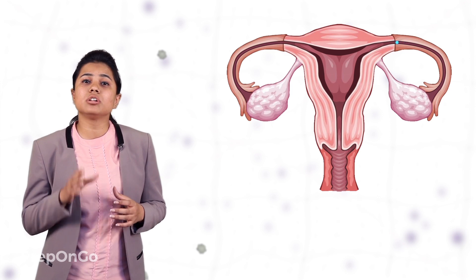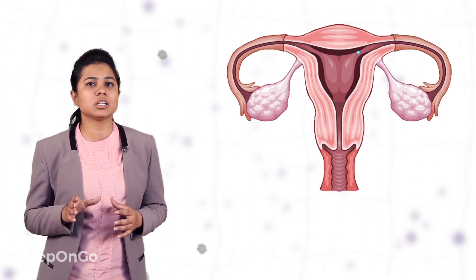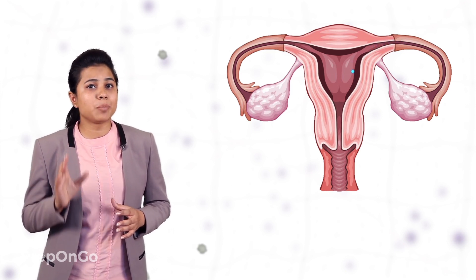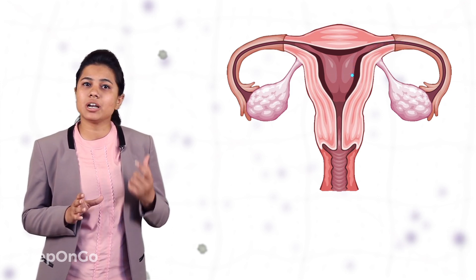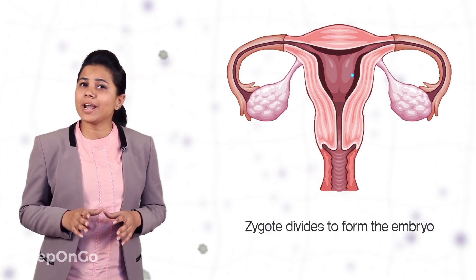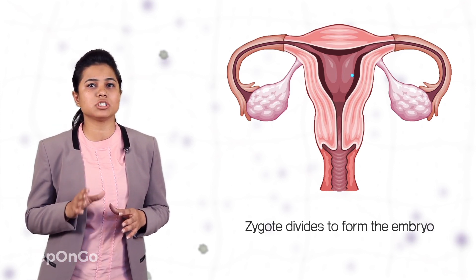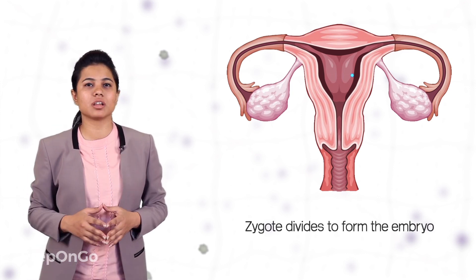This zygote moves down into the uterus where it implants in the inner lining of the uterus and divides multiple times by the process of mitosis.